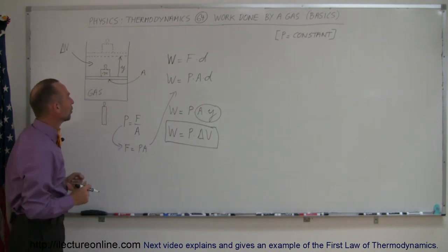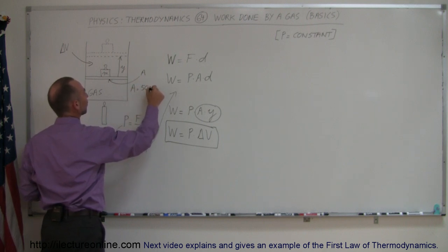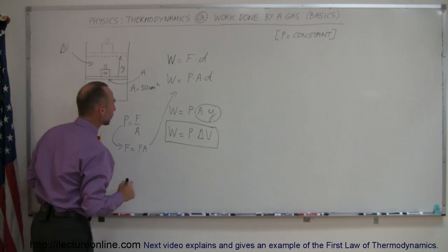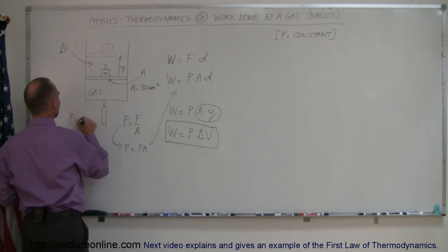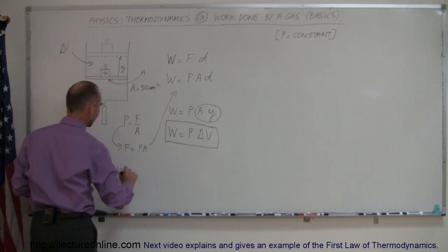Let's put some units on that. The cross-sectional area is 50 square centimeters. The pressure P is 1.5 atmospheres. The height gained, y, is 10 centimeters. What is the work done in this particular case?